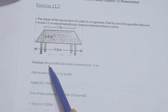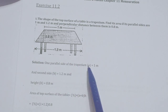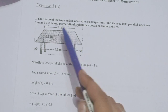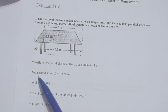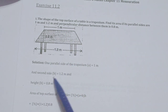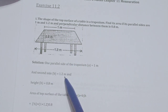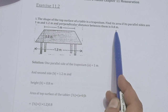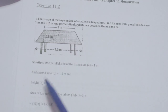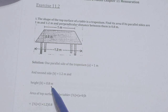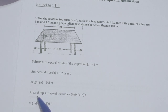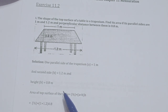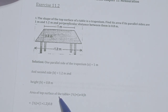We have parallel sides given: 1 meter and 1.2 meter, and perpendicular distance given is 0.8 meter. So one parallel side A is 1 meter, second parallel side B is 1.2 meter, and height is 0.8 meter. Now we have to find the area of the top surface of the table.